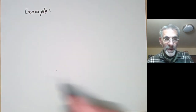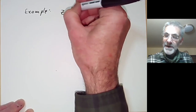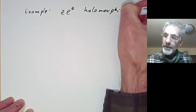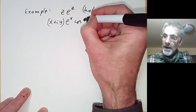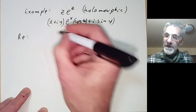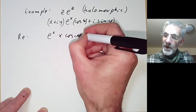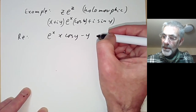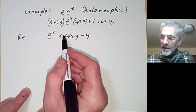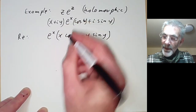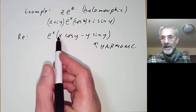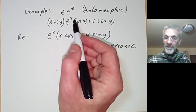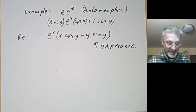Here's another example. We can write down quite complicated-looking functions that are harmonic. Take z times e^z, which is holomorphic, and take its real and imaginary parts. We get (x + iy) times e^x(cos y + i sin y). Taking the real part gives e^x times (x cos y minus y sin y), which is harmonic. Checking this directly by applying the Laplace operator would be a bit tiresome; it's far easier to just write down a holomorphic function and take its real part.